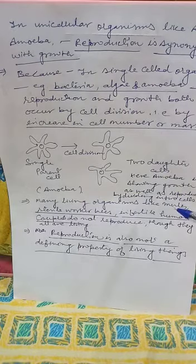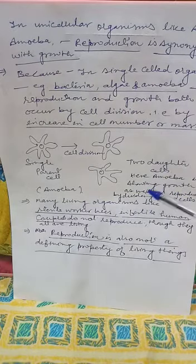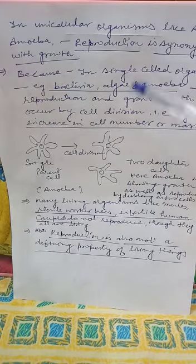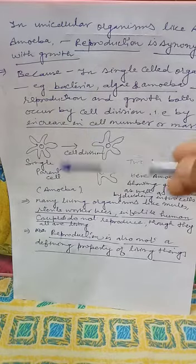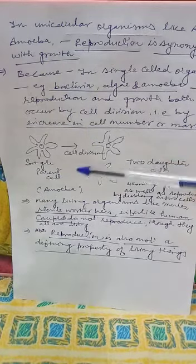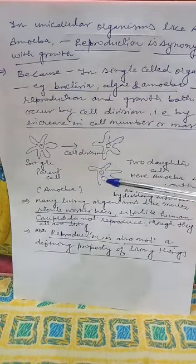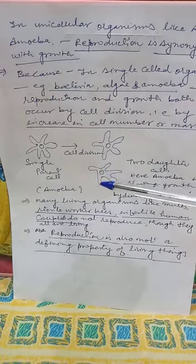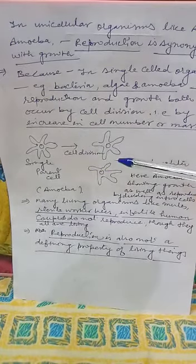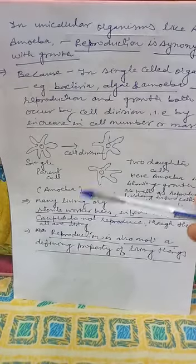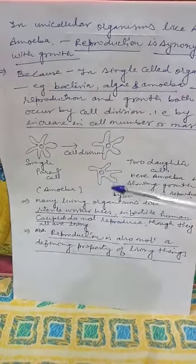Amoeba here is showing growth as well as reproduction — reproduction by dividing into two cells. So we can say that reproduction is synonymous with growth, because amoeba grows by increasing in cell number, and this increase in cell number through cell division also reflects the mode of reproduction.